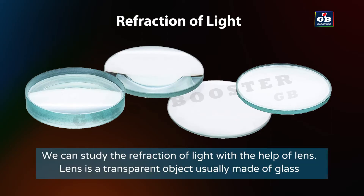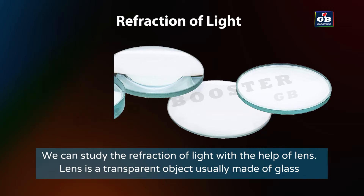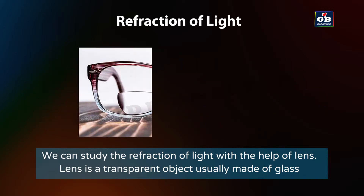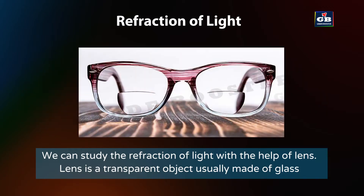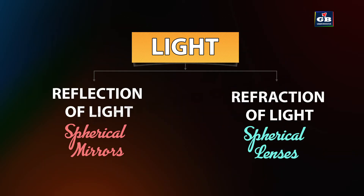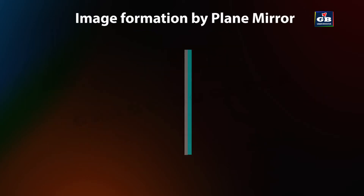We can study the refraction of light with the help of a lens. A lens is a transparent object, usually made of glass. Eyeglasses are examples of lenses used in our day-to-day life. First, let us study the reflection of light with the help of mirrors. This is a plane mirror.